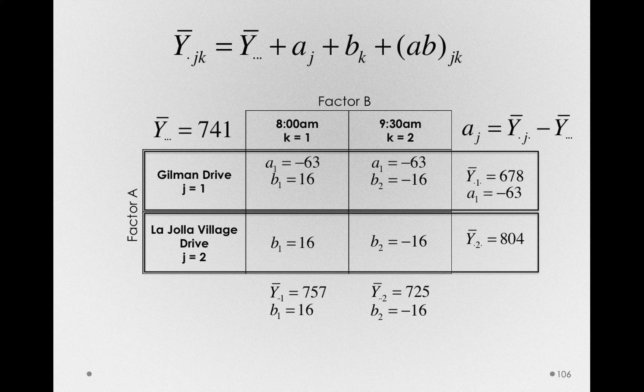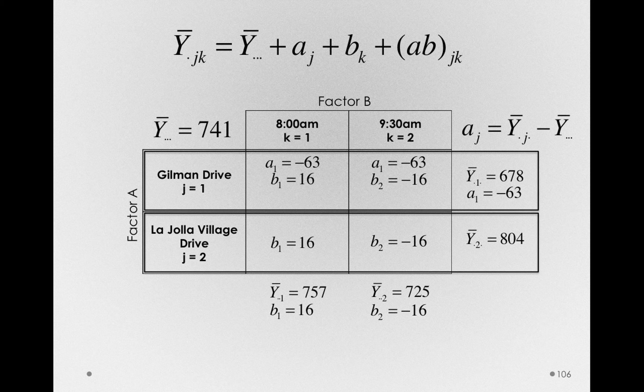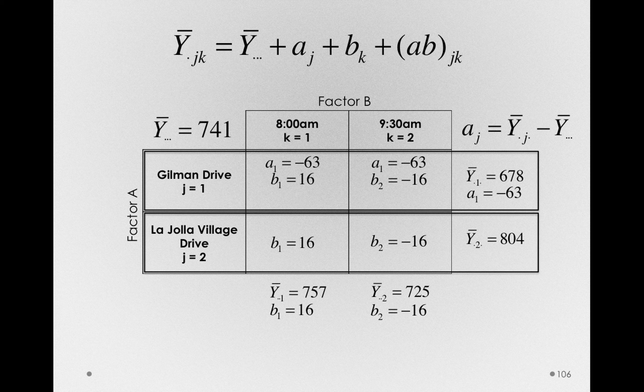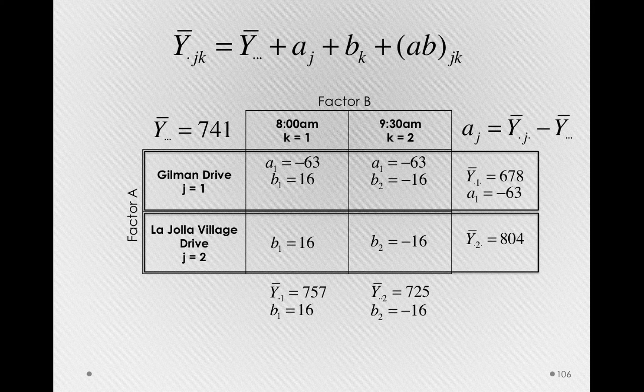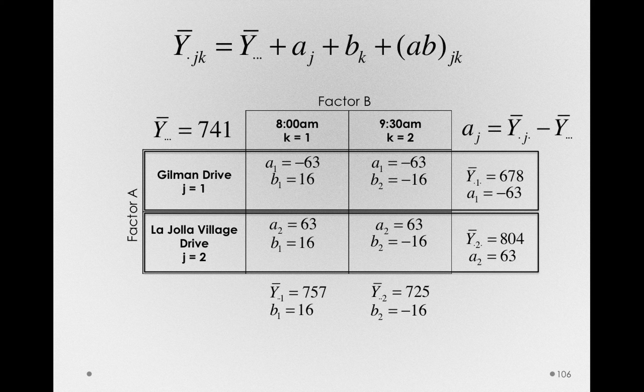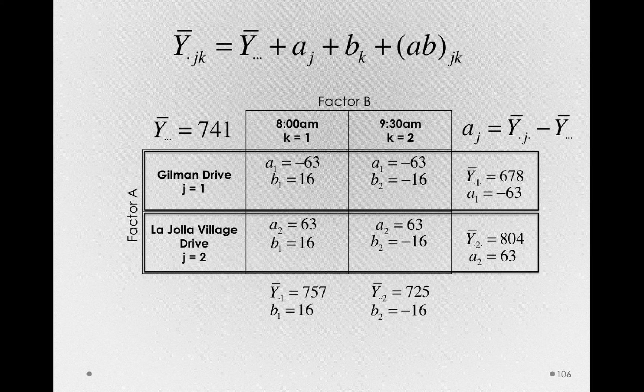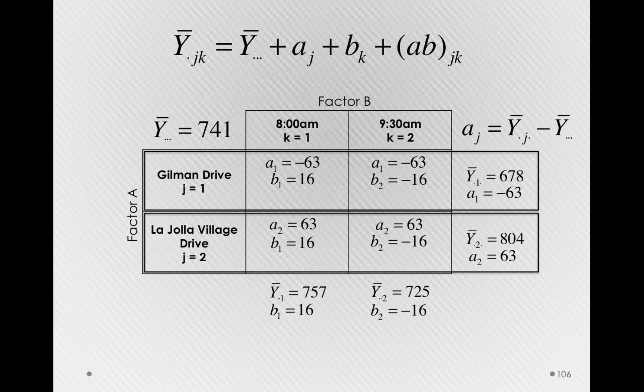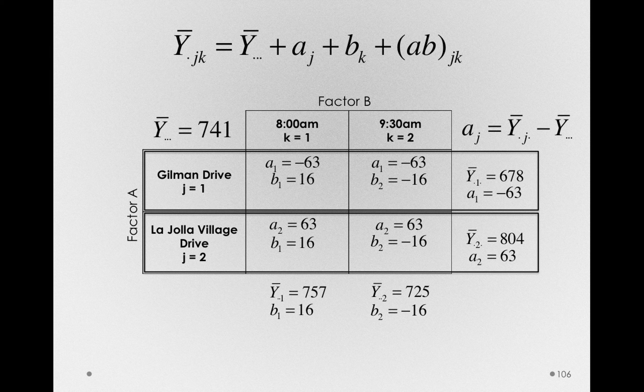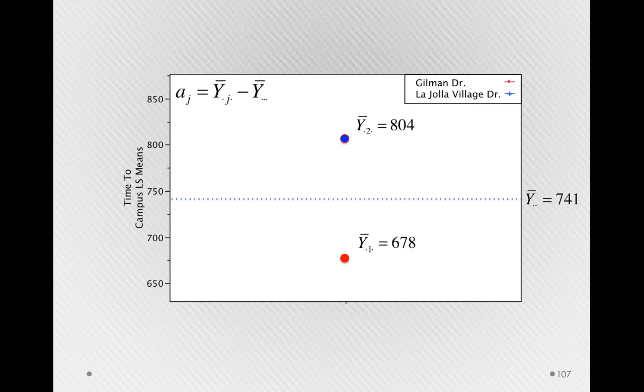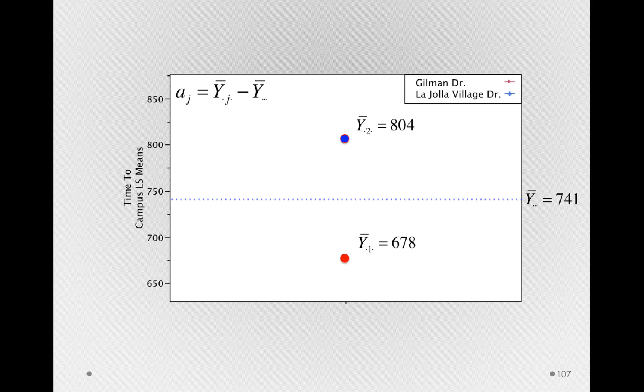So for Gilman Drive, we find this to be A sub 1 equals negative 63. And as you might guess, A sub 2 is simply the opposite of that, positive 63. Like we saw for factor B and the B terms, these A terms are also yoked. To the degree that one is above average, the other has to be below average.